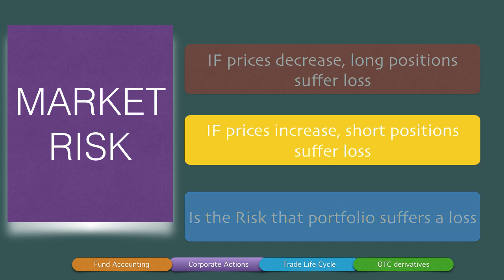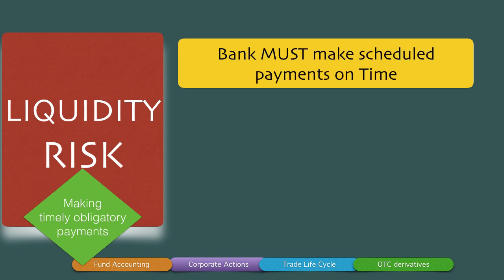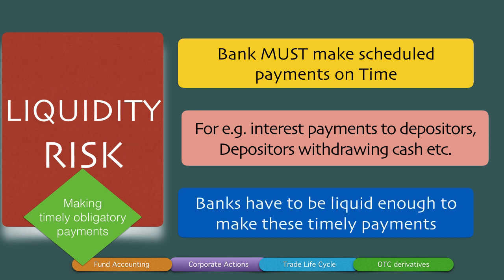The third kind of risk — an outcome of the global financial crisis of 2007-2008 — is liquidity risk. Liquidity is the ability to make timely obligatory payments. Banks must make scheduled payments on time because we trust the bank to do that. All of us put money into banks we have complete faith in — when we go to the ATM or enable NEFT transfers, we trust the payments will go through. Banks must therefore make scheduled payments on time, such as interest payments to depositors. If a depositor wants to withdraw money, the bank must have the funds to pay. Banks have to be liquid enough to make these timely payments.